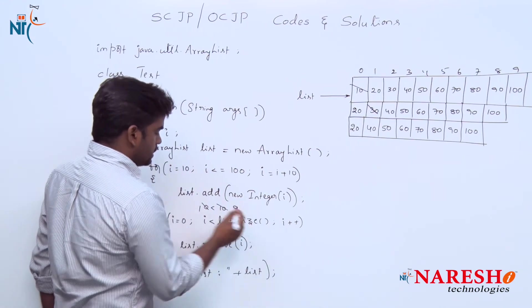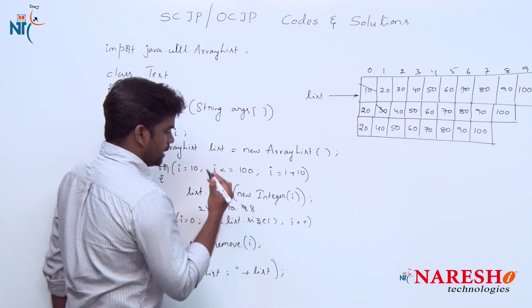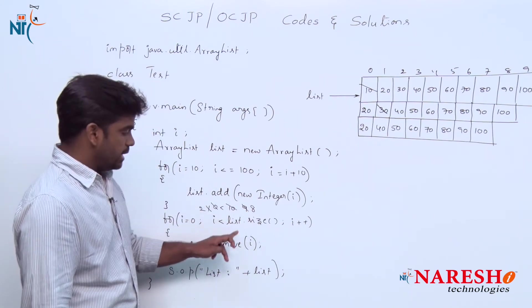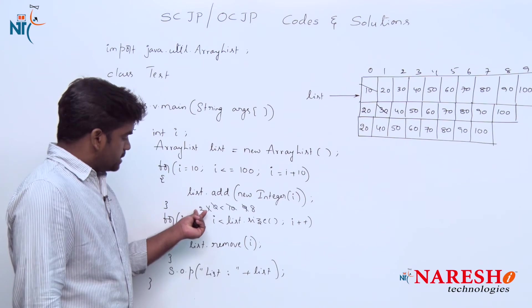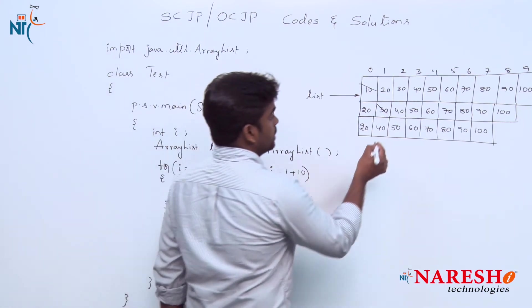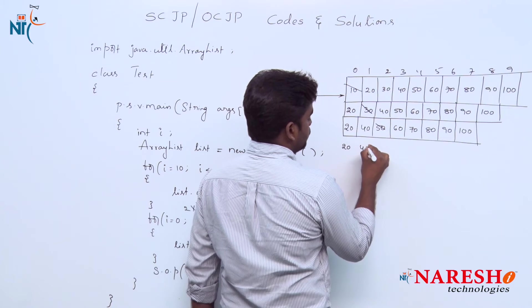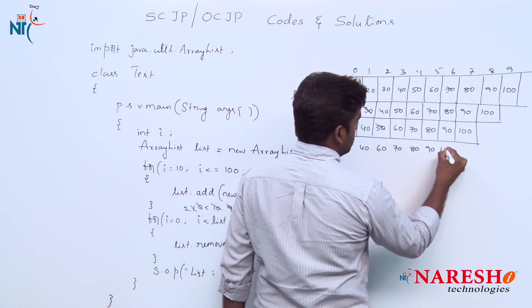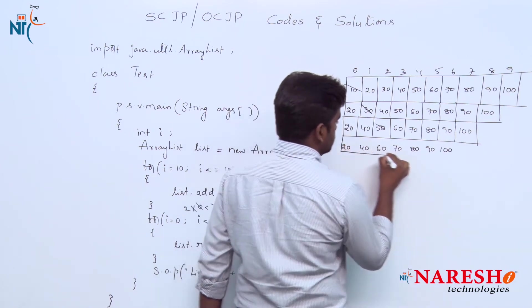Now i value increases to 2 and the size is decreased to 8. 2 is less than 8, condition is true. Again the element at index number 2 will be removed. 50 will be removed. So 20, 40, 60, 70, 80, 90, 100. The size is decreased to 7.